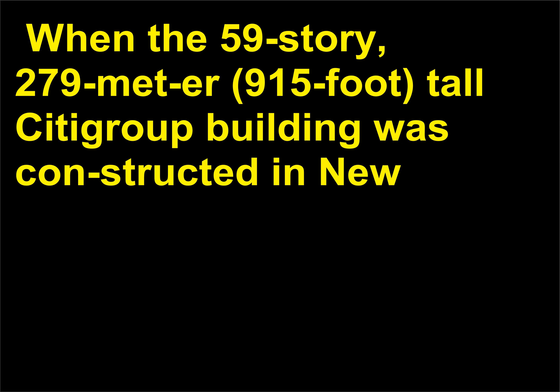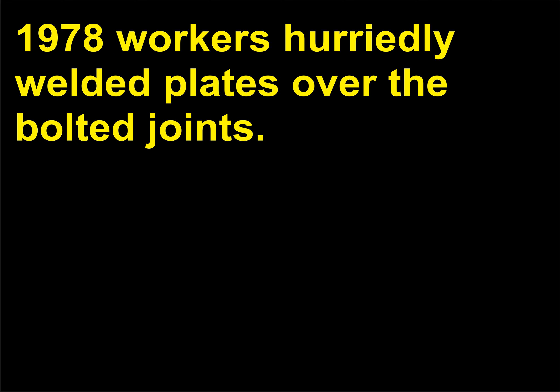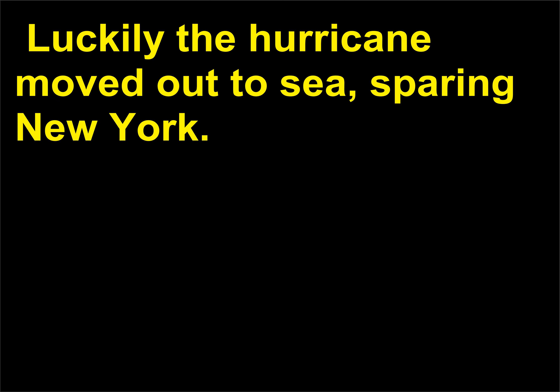When the 59-story, 279-meter (915-foot) Citigroup Building was constructed in New York City from 1974 to 1977, the frame was bolted together. But later computer models showed that if hurricane-strength winds struck the building it would be in danger of collapse. As a hurricane moved up the eastern seaboard in 1978, workers hurriedly welded plates over the bolted joints. Luckily the hurricane moved out to sea, sparing New York.